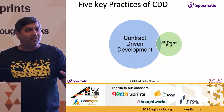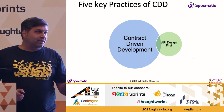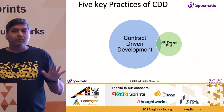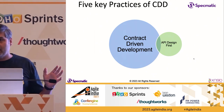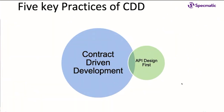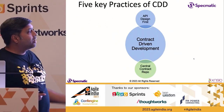I'm going to take five key practices for you to be able to do contract-driven development. The first is API design first. The key idea is you want to collaboratively design the API and document it using one of the standard specifications, so that you have it available and referenced by everybody else.